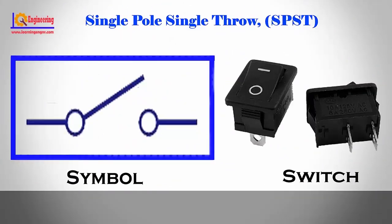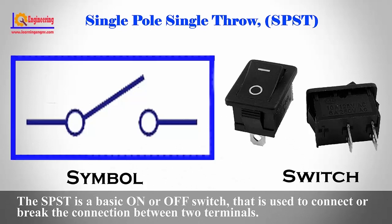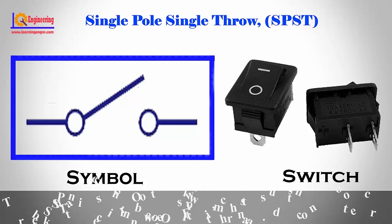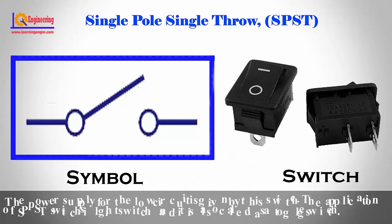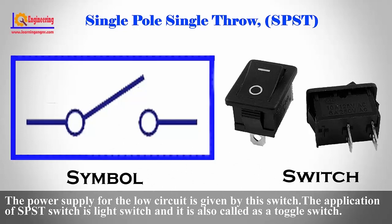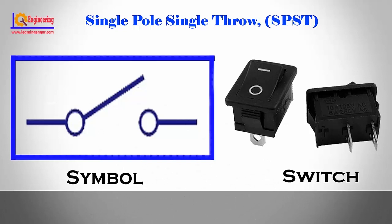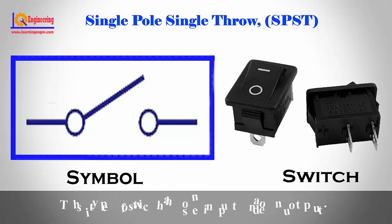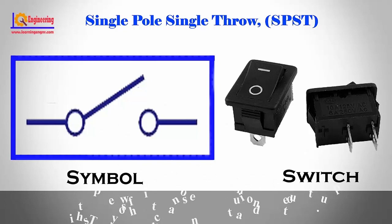SPST — Single pole single throw. The SPST is a basic on or off switch that is used to connect or break the connection between two terminals. The power supply for the circuit is given by this switch. Its application is in light switches and it is also called a toggle switch. This type of switch has one input and one output.